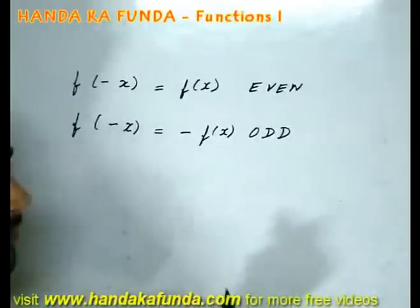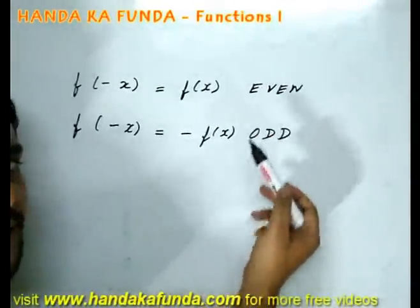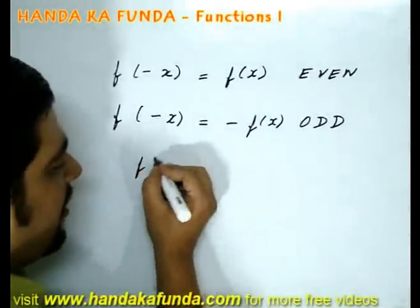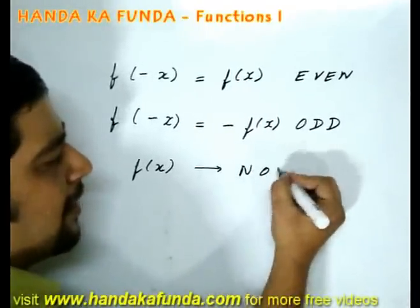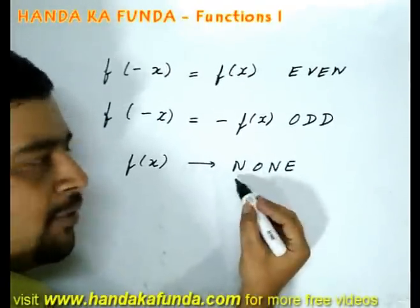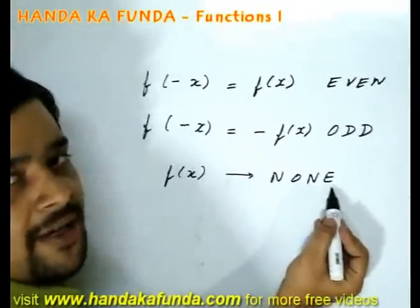A natural number may be even or odd, those are the only two choices. But a function, if it does not follow any of these properties, then it is known as neither odd nor even function.